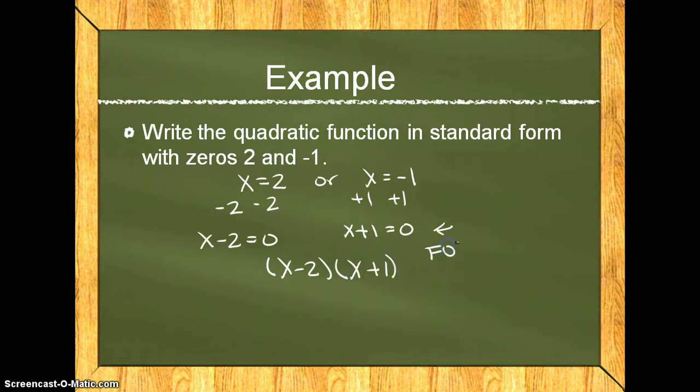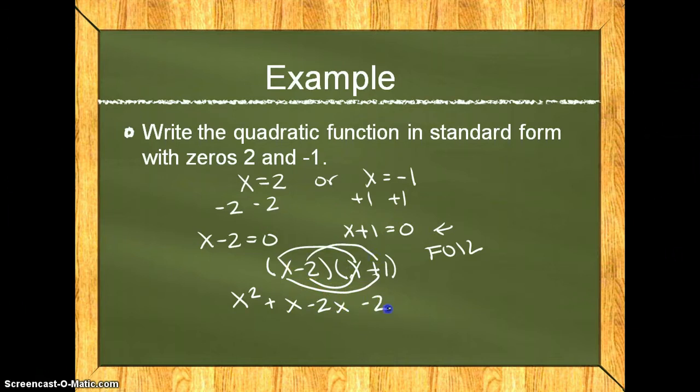Now you need to FOIL. First is x squared, outside is plus x, inside is minus 2x, last is negative 2. Combine like terms, and you are done.